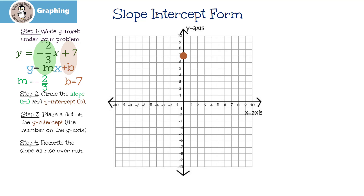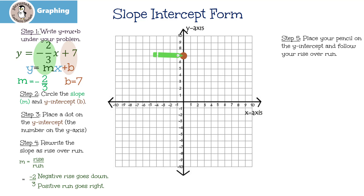The next step is to rewrite the slope as rise over run. In our case, it's going to be really easy because negative two-thirds is already a fraction. You're going to notice that I put the negative in the numerator or the top — you don't put it in both, just one or the other. Since the top or the numerator is negative, that tells me we're going to go down. The 3 is positive, so the run is going to go to the right. Step 5: place your pencil on the y-intercept and then follow your rise and run — the rise says go down 2, and then the run says go 3 in the positive direction. And there's our dot.